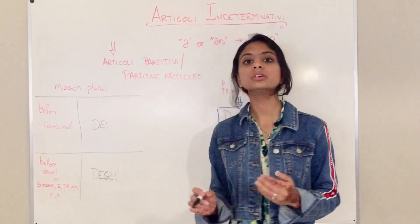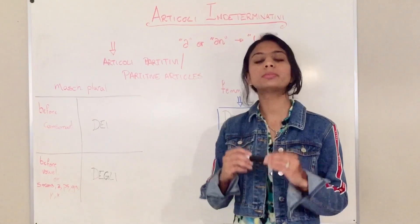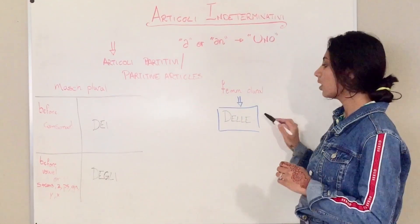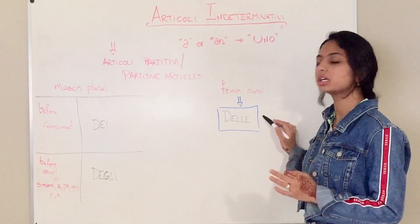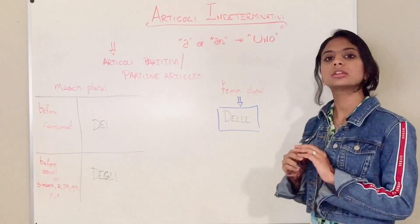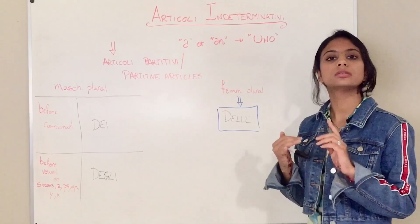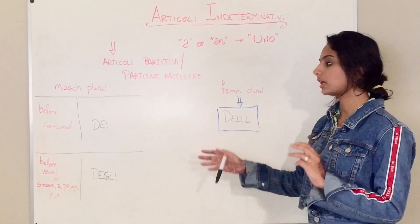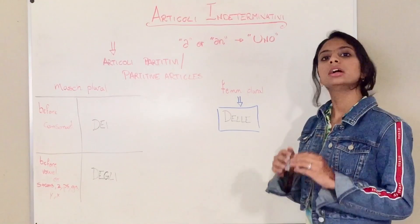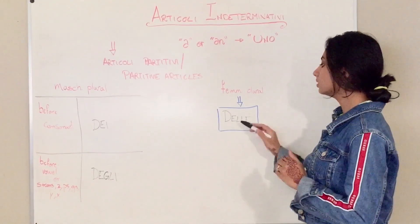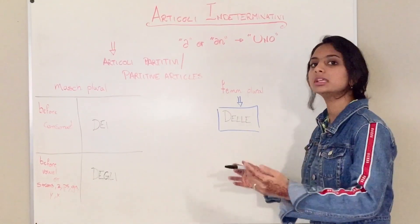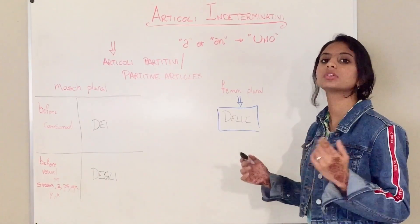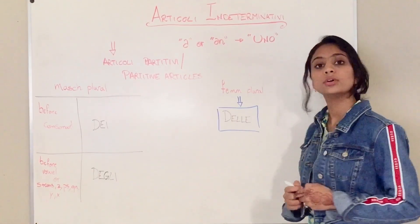Now the feminine plural part is super easy — there is only one word, one article. Whether it comes before a vowel, a consonant, or any of those special rules, for feminine plural you always just put delle. Delle amiche, delle case, delle mamme, etc.